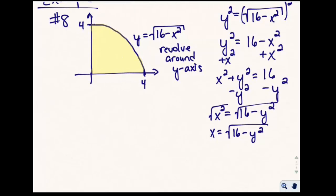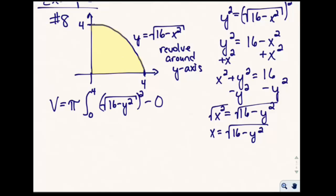Now that our equation is in terms of y and our bounds are zero to four on the y-axis, we write the volume formula: volume equals pi times the integral from zero to four of the square root of sixteen minus y squared, squared, minus zero squared. The y-axis is x equals zero, so integrating with respect to y gives us simply sixteen minus y squared, dy — definitely not a horrible thing to integrate.